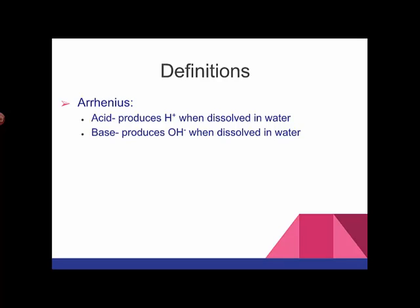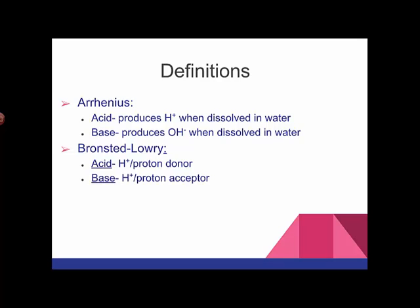The Bronsted-Lowry definition is slightly different. According to Bronsted and Lowry, an acid is a proton donor. That means it's a species that can give up an H-plus proton ion. And a base, therefore, is a proton acceptor, an H-plus acceptor, something that can take H-plus.